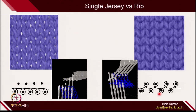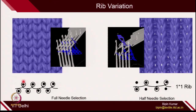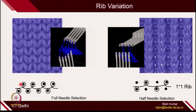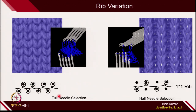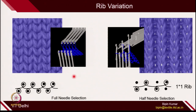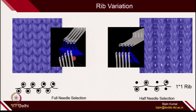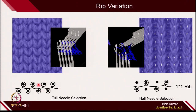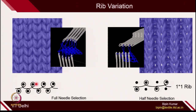Now let's move to the complicated rib structures. In full needle rib, all the needles are making loops on both the beds — front bed and back bed. So all needles are operating. This is called full rib or full needle selection rib.